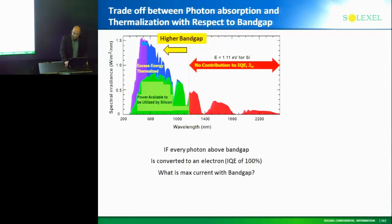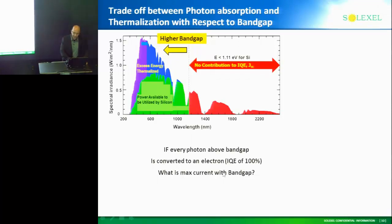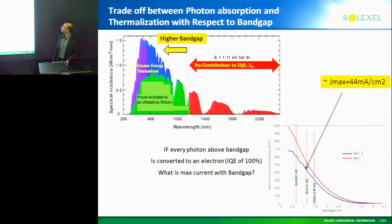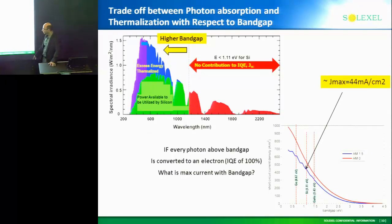What happens if every photon above the bandgap was converted to an electron? If internal quantum efficiency is 100%, what is the maximum current as a function of bandgap? This curve actually plots that. Focusing on the blue curve: as bandgap increases, the amount of current you collect reduces — that should make sense. So gallium arsenide is at 1.42 eV. For silicon, if you collected every photon above the bandgap, you would get 44 milliamps per centimeter squared — that's the absolute maximum possible.